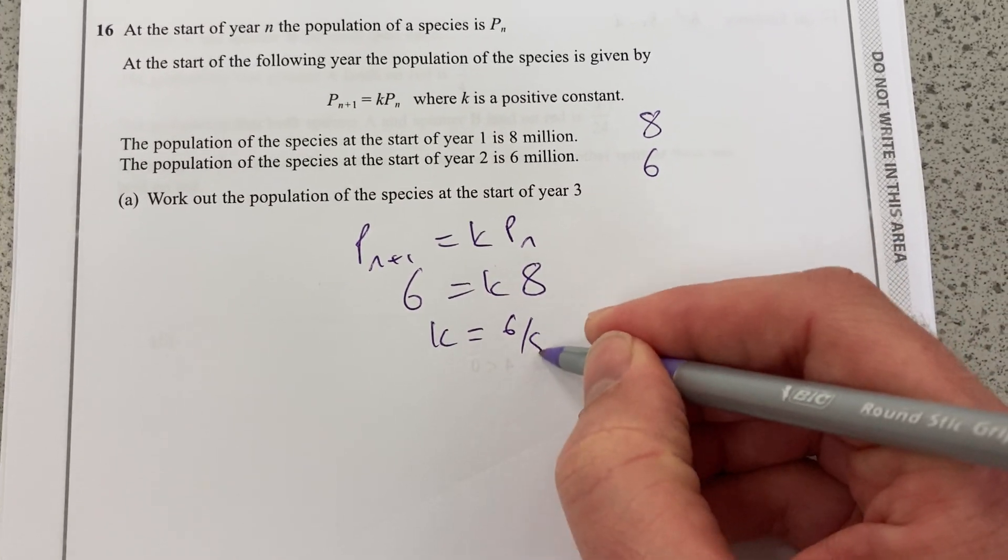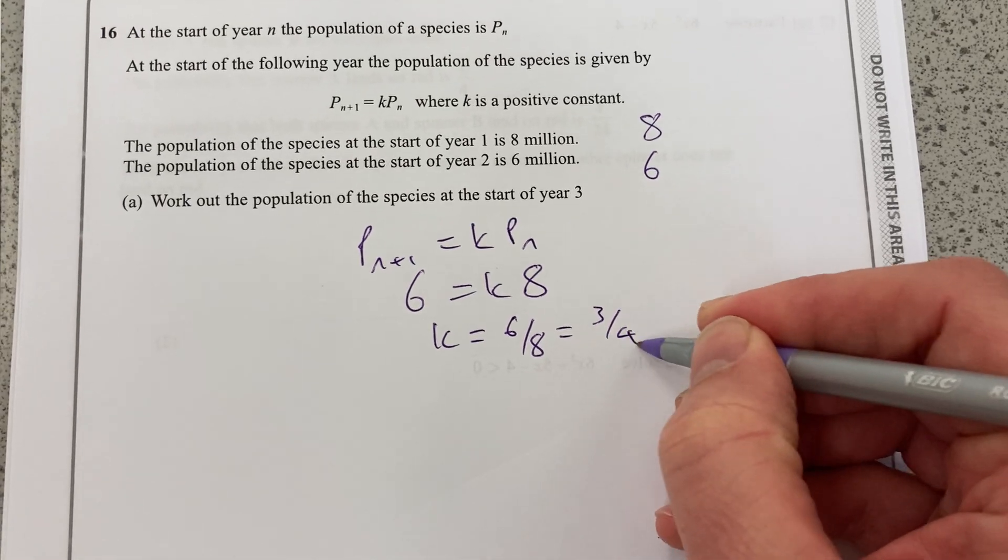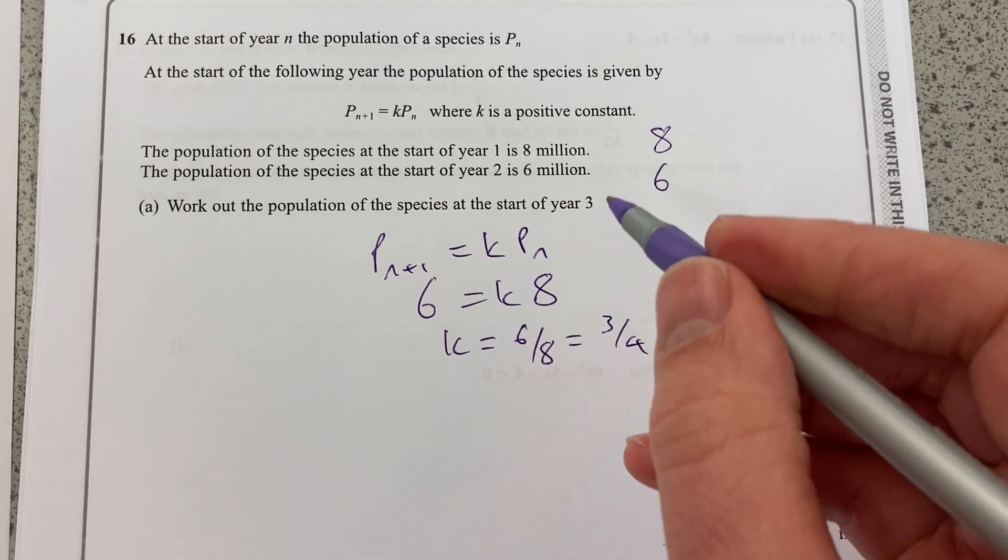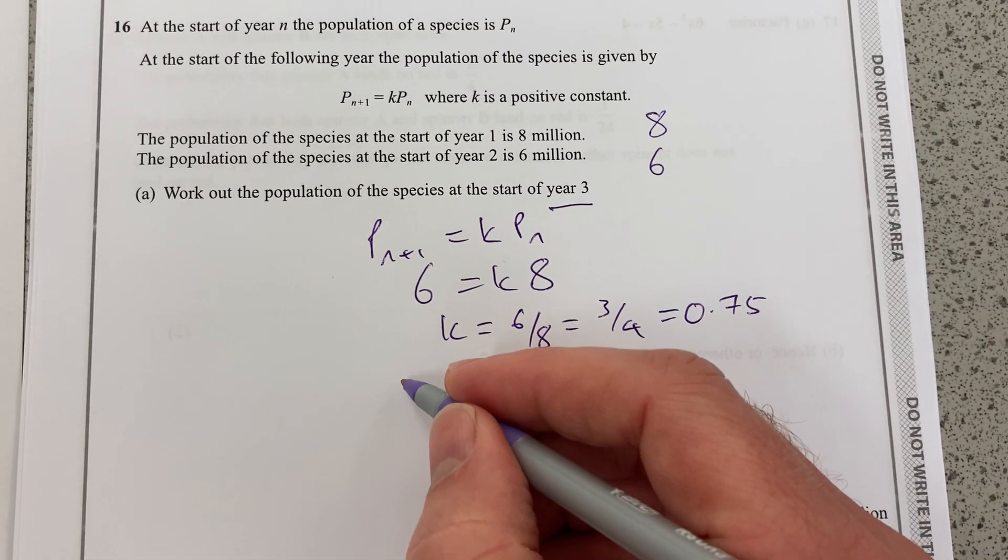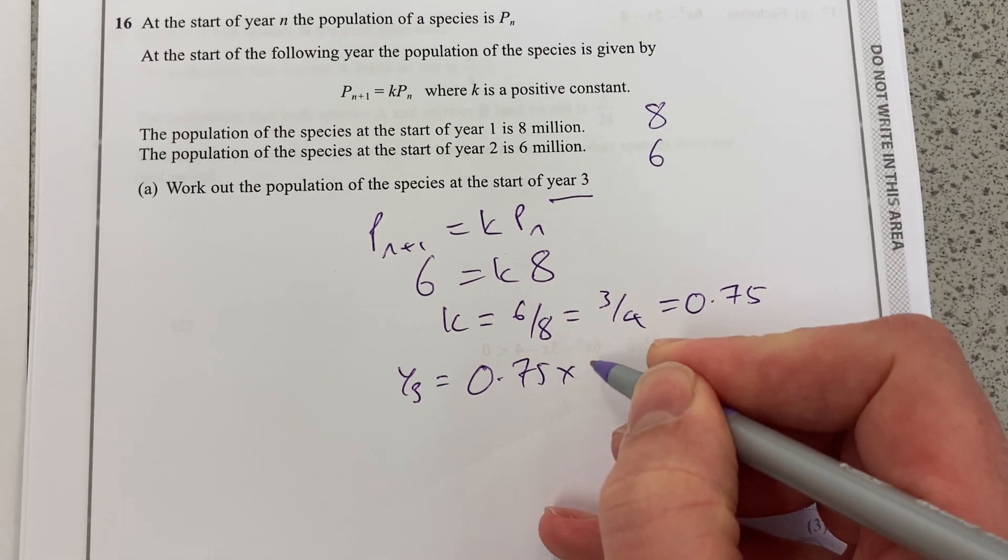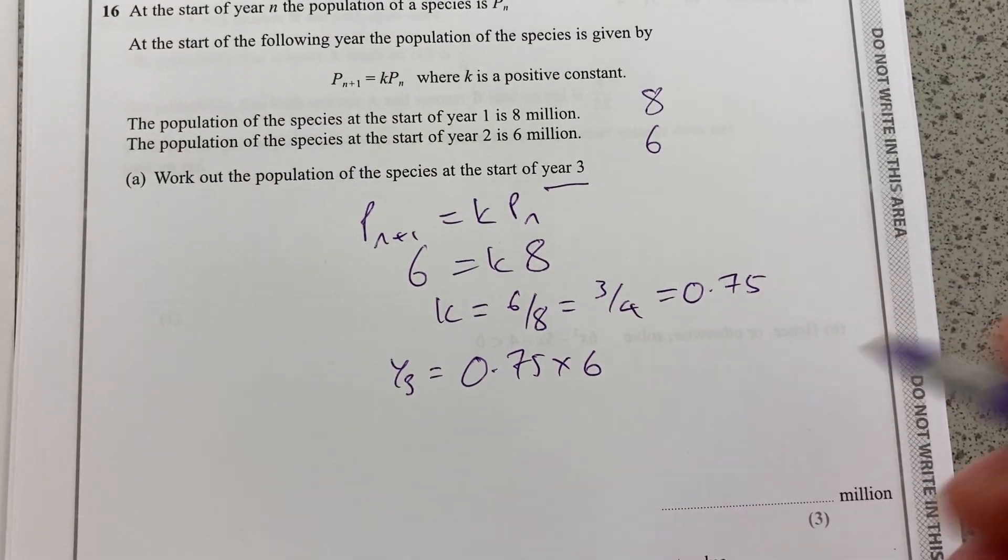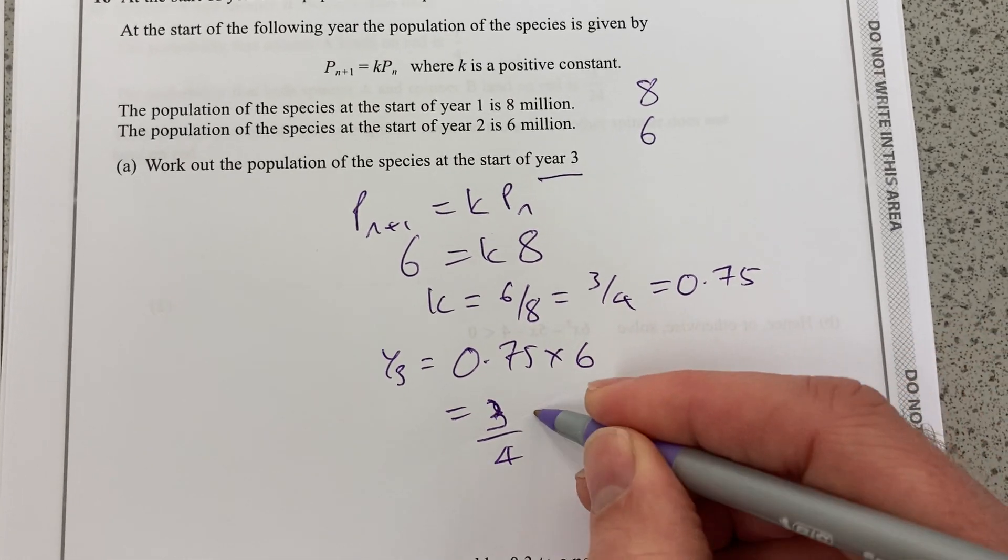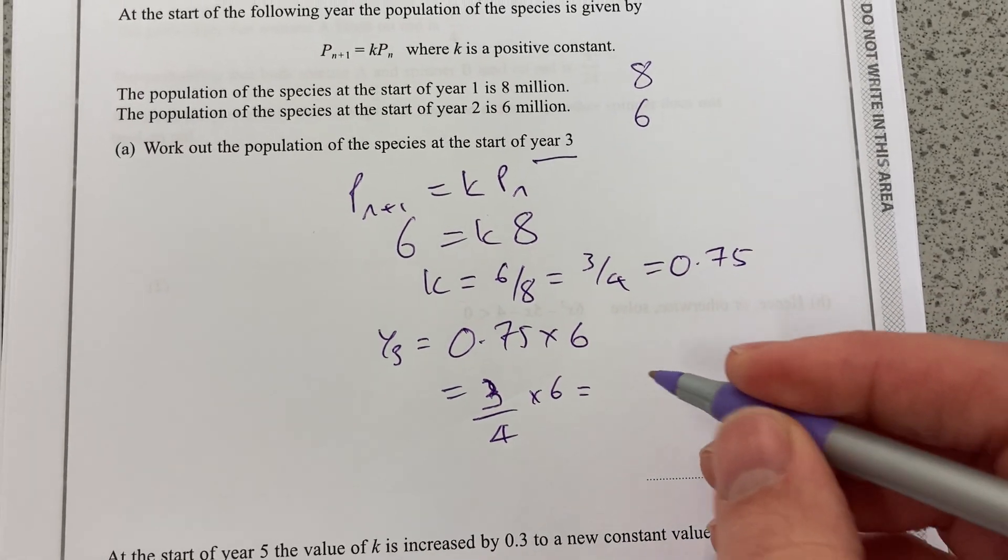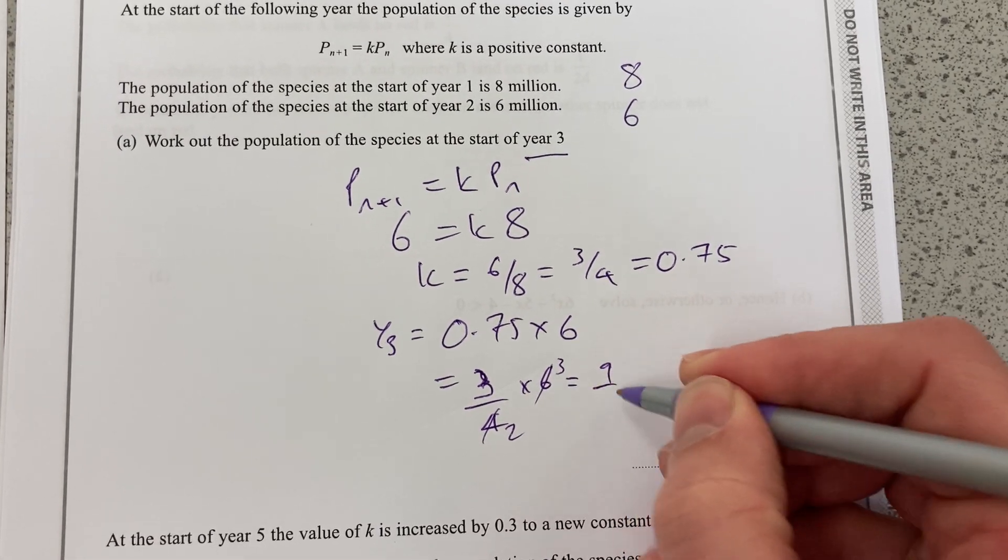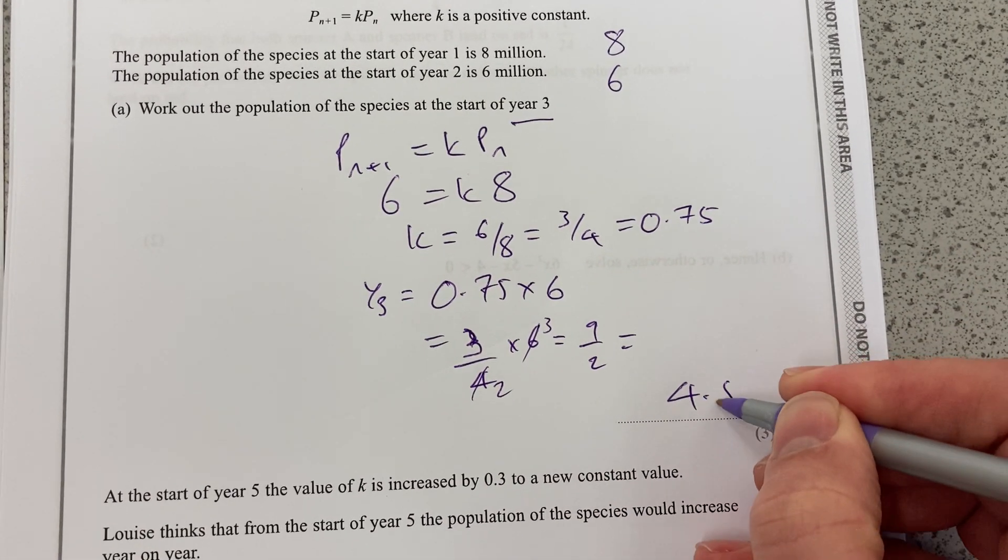k is going to be 6 over 8, which is 3 quarters or in decimals 0.75. Now to work out the population of the start of year 3, we're going to say, well, year 3 will equal 0.75 times 6, or 3 quarters of 6. That's a terrible 3. 3 quarters times 6, which is, cancel 2s there, 9 over 2, which is 4.5.